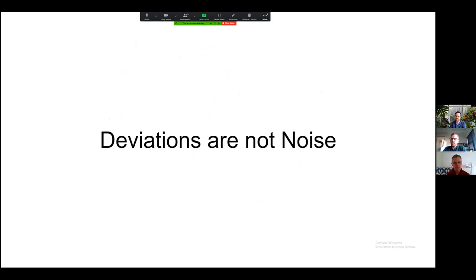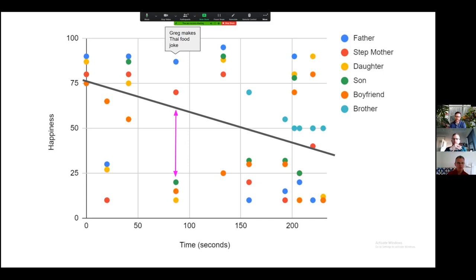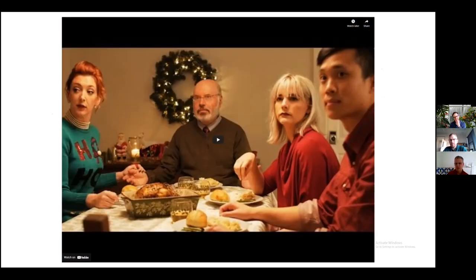When we fit a linear model, we assume all deviations are effectively noise. At the moment where Greg makes his typhoon joke and there's a difference between Kyle, the boyfriend, and the daughter's response — in a linear model this deviation gets treated as error and thrown away. Simon argues that these deviations are actually intrinsic to the interaction, not noise to be discarded.